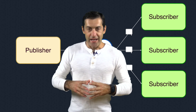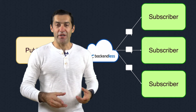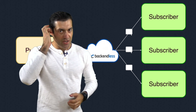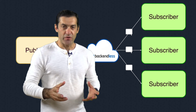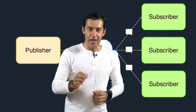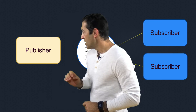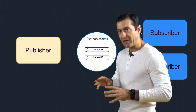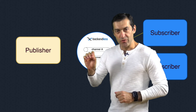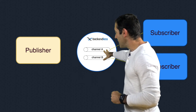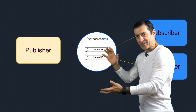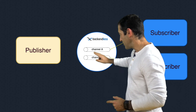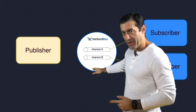What makes Backendless PubSub implementation infinitely more powerful is the fact that we provide intelligent delivery and message filtering. With message filtering, there is a way to send messages to specific channels. Consider Backendless Cloud as the message broker, and let's say it has two different channels: channel A and channel B.